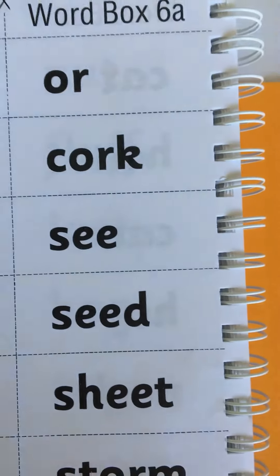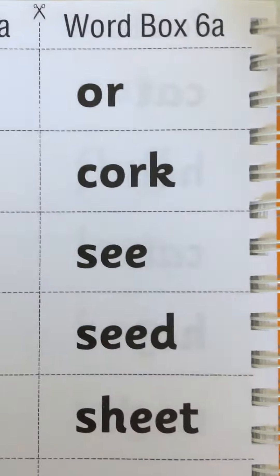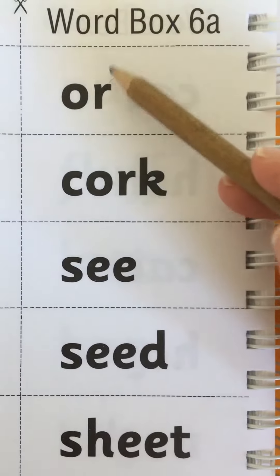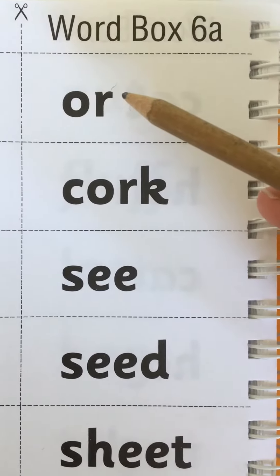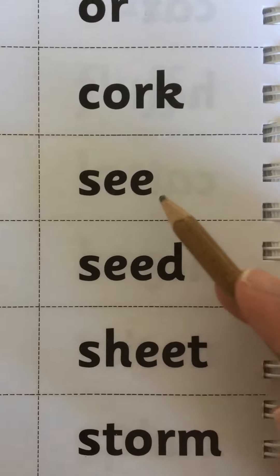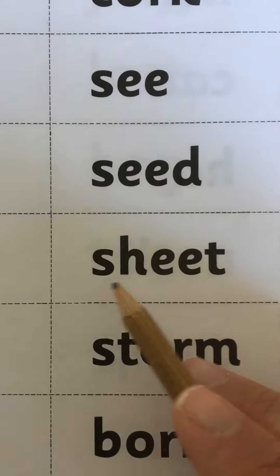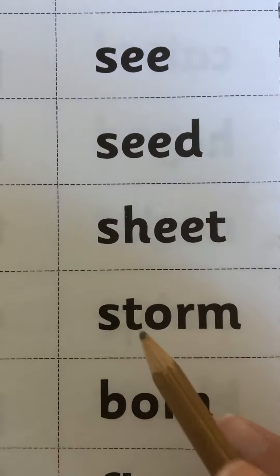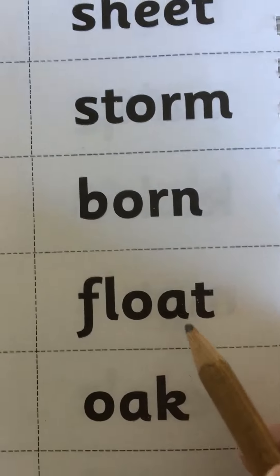Let's see if there are any word letters that are going to be tricky. This is the sound 'or'. Remember that 'sh', 'st', 'or'. The rest of them are 'oa', 'oa', and 'ai'. Okay, let's read through these.